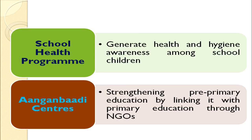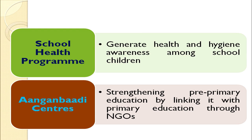Another intervention was Anganwadi centers, created under Lok Jumbesh project to strengthen pre-primary education by linking it with primary education. NGOs were involved in the state of Rajasthan to achieve the target of universal primary education. These were the major interventions implemented under Lok Jumbesh project in Rajasthan to achieve the target of universal primary education.